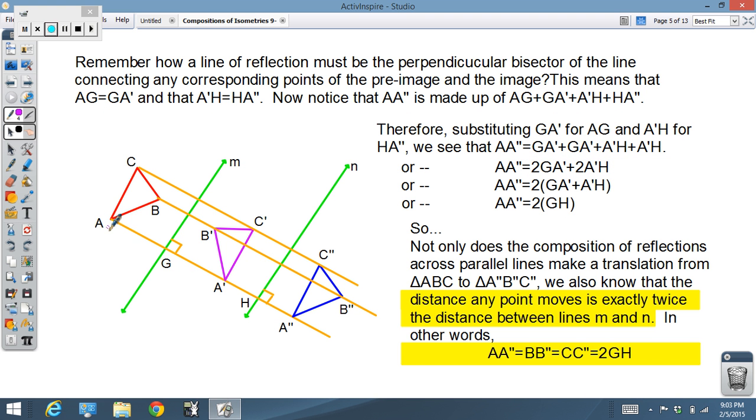And basically, what it boils down to, guys, is that the distance from A to A double prime is exactly twice the distance between the two parallel lines. So, you don't really need to memorize why this is done. I just thought that's kind of cool to show you. But what you do need to know is that the distance between any points, between the point on the preimage and the final image, will be exactly twice as long as the length of the segment between the two lines we reflected it over.